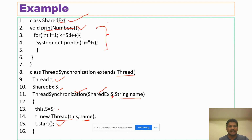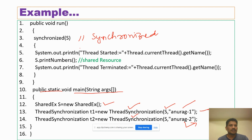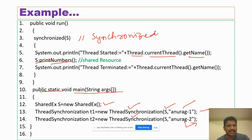Once threads have been started with t.start(), control comes to the run method. In the run method, I used the synchronized block to access the shared resource. Thread started — which thread is currently running is obtained using getName(). To access the print number method, which is the shared resource, I use the synchronized keyword, which means the threads will be executed one after another. I will show you what happens if the synchronized keyword is not used.